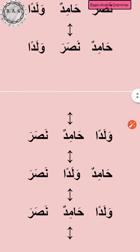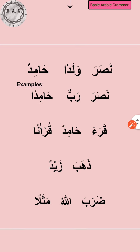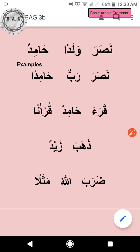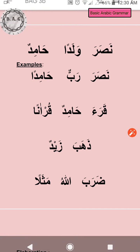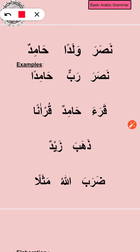The 'in' sound is called the jer state. We'll move on to that after these examples. So: 'Nasara Rabbun Hamidun' — Rabbun helped Hamidun. I hope you said Rabb helped Hamid, because 'un' form is in Hamidun (nasb) and Rabbun is in rafa form.